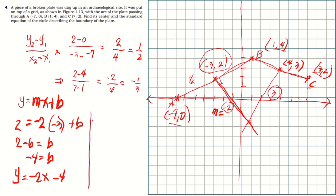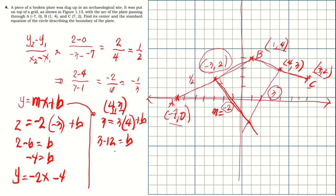For the second bisector with slope three passing through midpoint four, three: substituting into y equals mx plus b gives three equals three times four plus b, so three minus twelve equals b, therefore b equals negative nine. The equation of this perpendicular bisector is y equals three x minus nine.